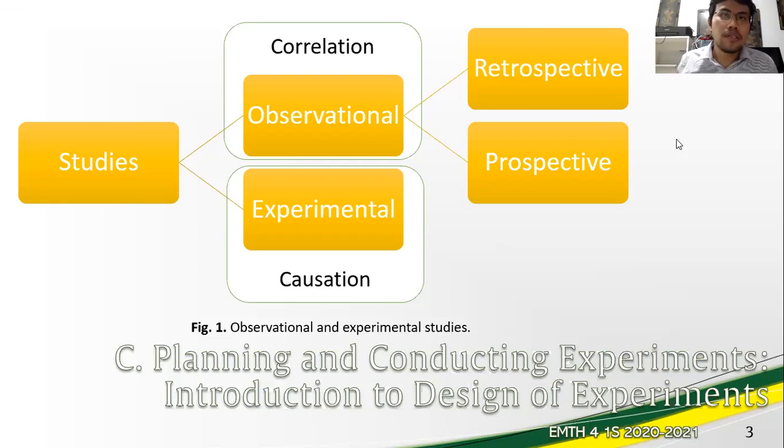In the case of an experimental study, two setups of samples are taken from randomly selected tomato plants in a given population. One sample set is then given the fertilizer, while the other is deprived. After harvest, fruit yield between the two samples are compared. If the fertilizer improved the fruit yield or not, causation is achieved.